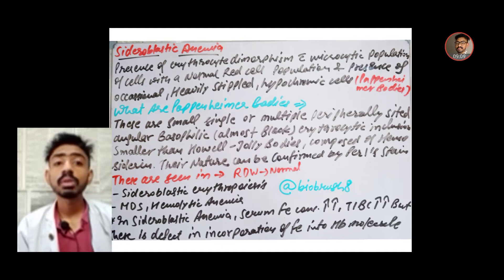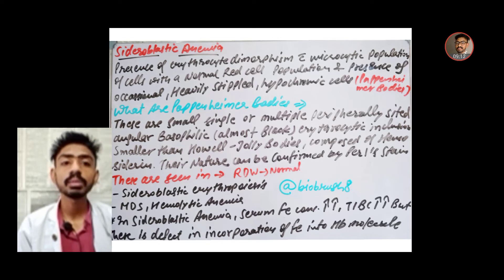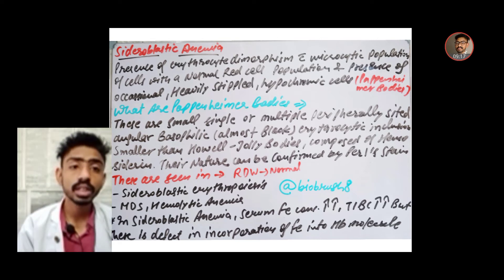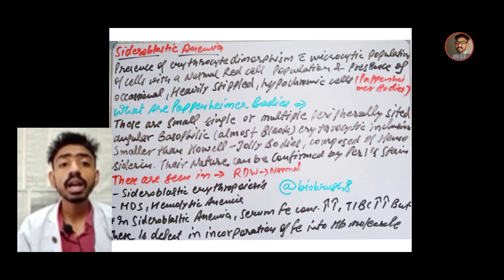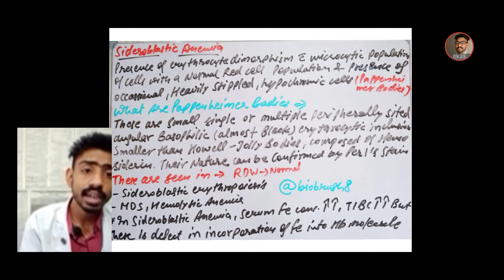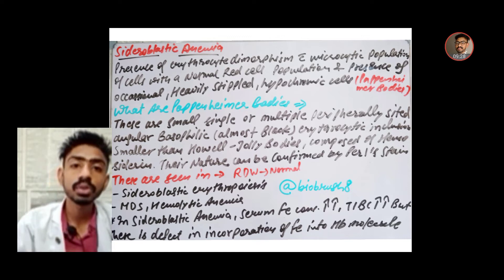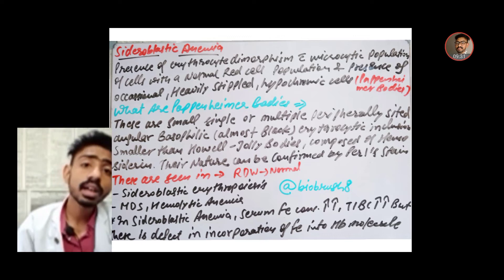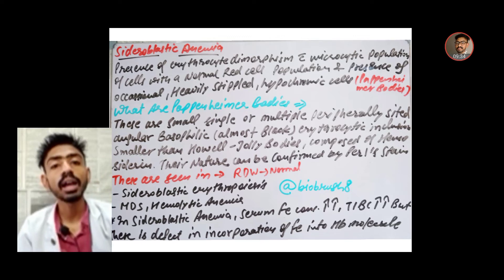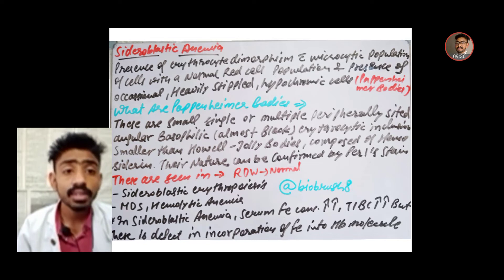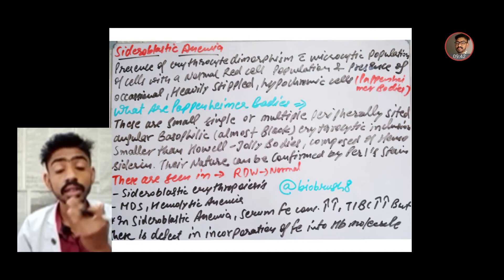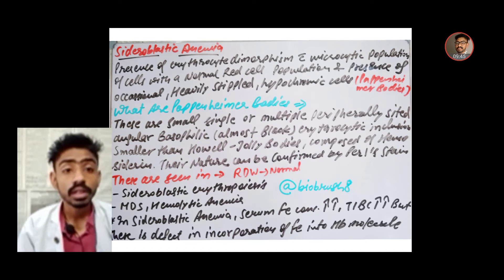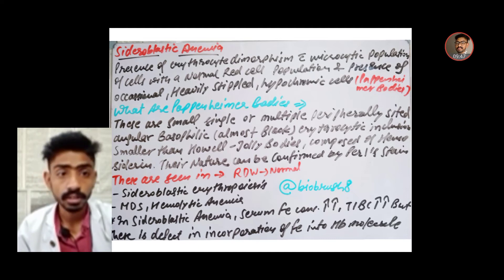In sideroblastic anemia, serum ferritin level increases and total iron binding capacity also increases. The key defect is in the incorporation of iron into the hemoglobin molecule — iron levels are normal but iron cannot be properly incorporated into the Hb molecule, so serum iron concentration and ferritin increase.